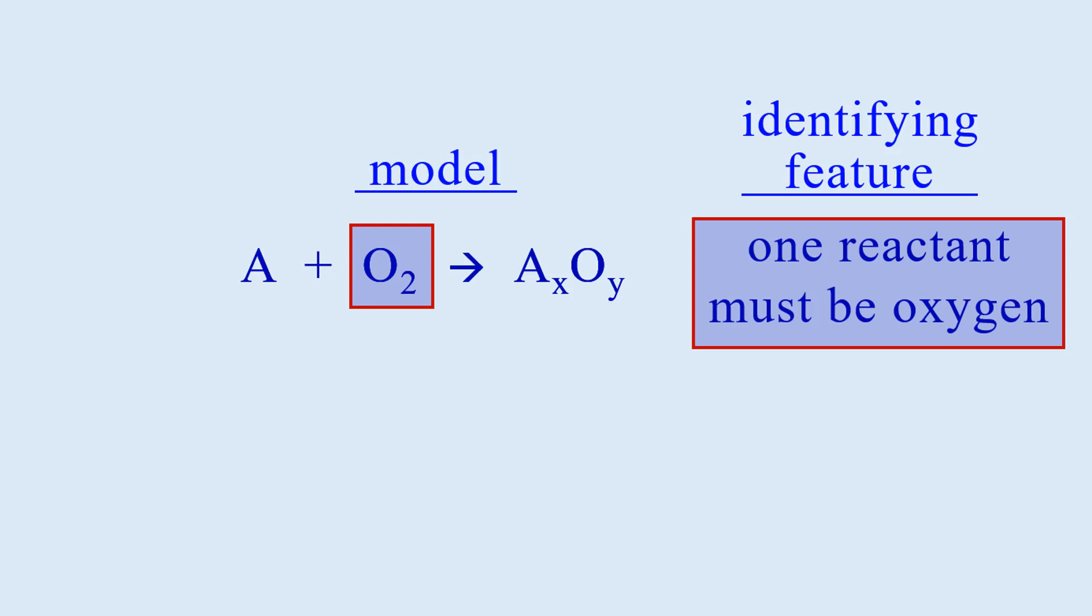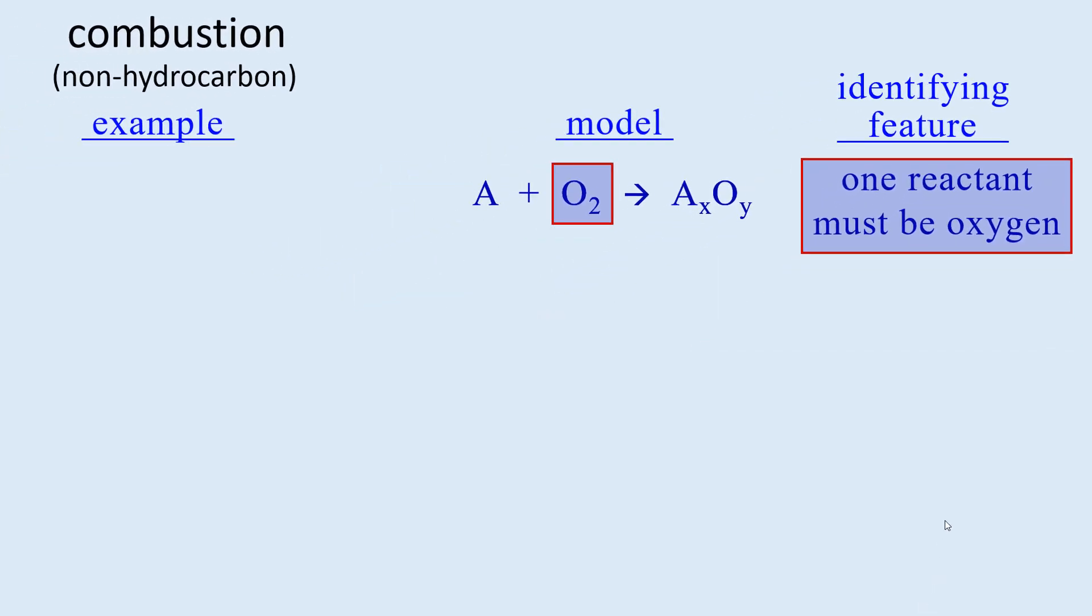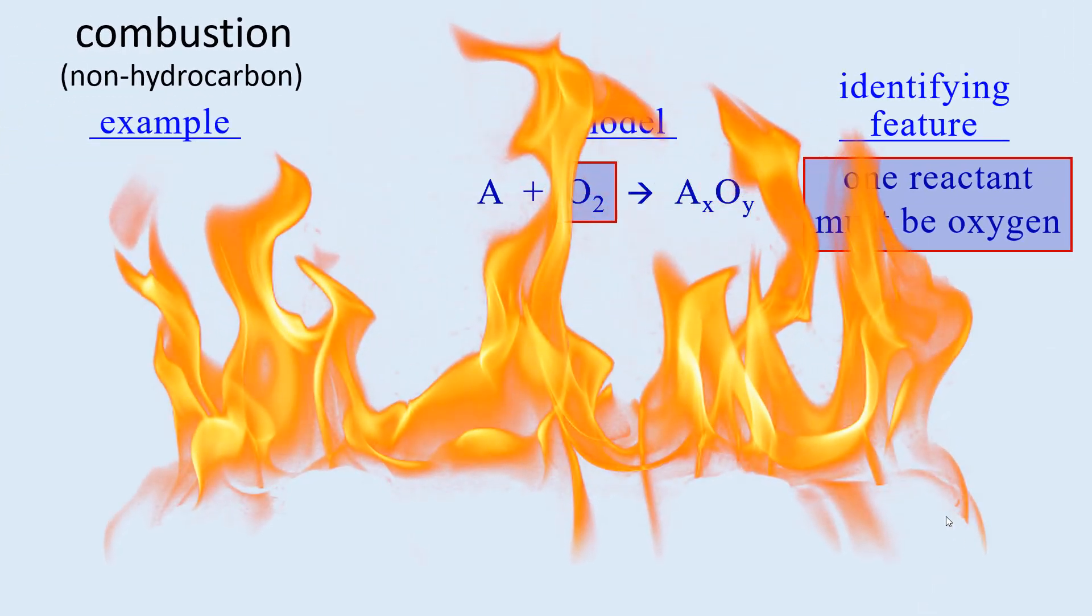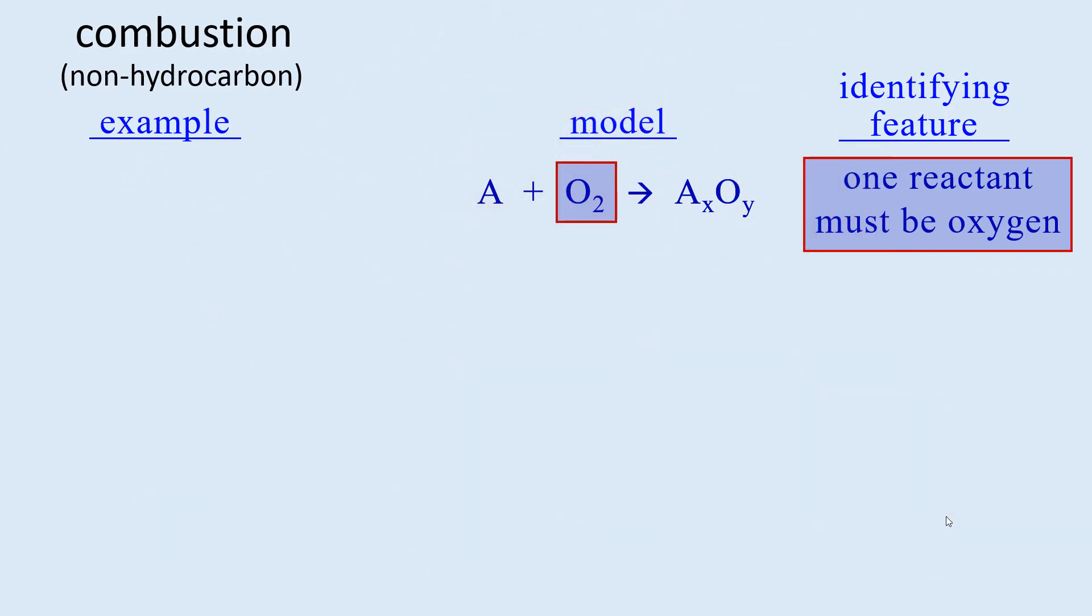There are many reactions constantly occurring all around us and in our bodies that are substances reacting with oxygen in the air or in our cells, but these are not combustions. We would notice combustion immediately because it gives off lots of heat and has a flame, in other words, fire. Fire is another word for combustion.